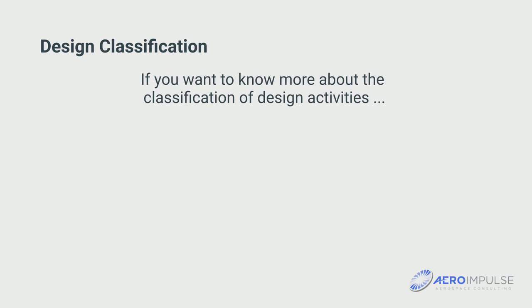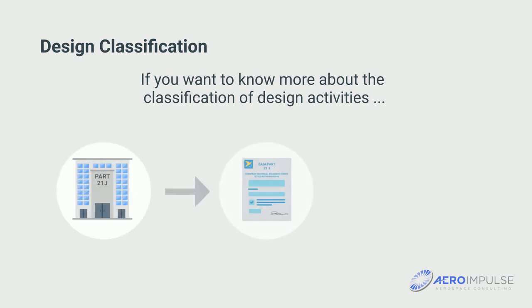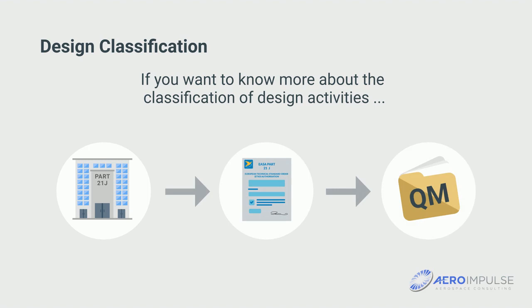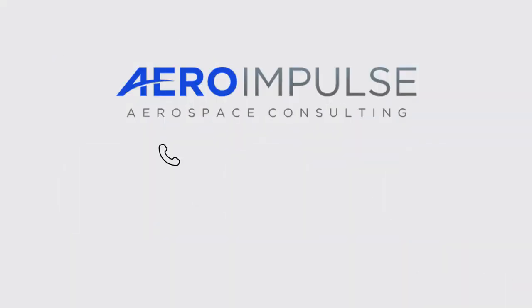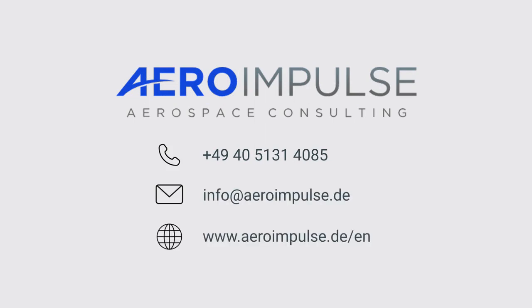If you want to know more about the classification of design activities, have a look at your QM documentation if your company has a 21J approval. You will find a procedure for this. Give us a call or send us an email if you are interested in this e-learning. Thank you.